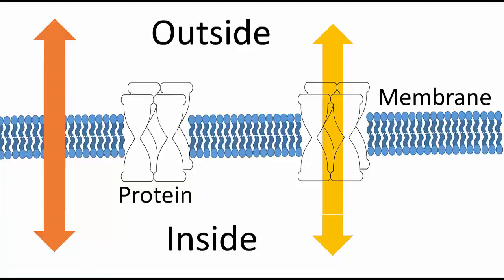Cell membranes are made out of phospholipids and they contain proteins which can influence the type of substances that move in and out of the cell. Some small molecules such as water, oxygen and carbon dioxide can pass through the phospholipid membrane by diffusion.